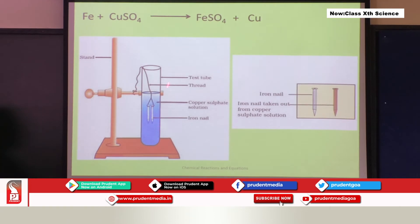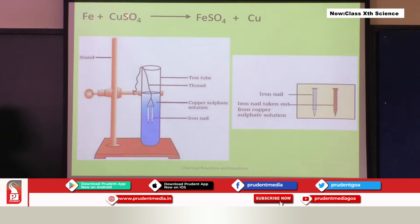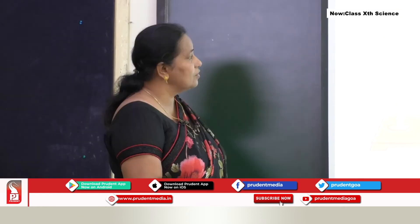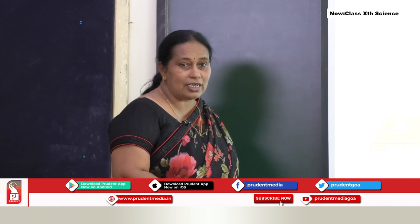Fe + CuSO₄ gives FeSO₄ + Cu. One more key point to remember in displacement reaction: in the reactants, there will be one element and one compound. I hope displacement reaction is clear for you.